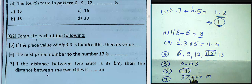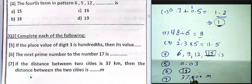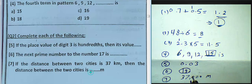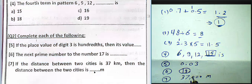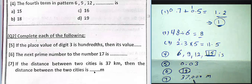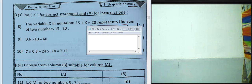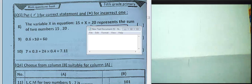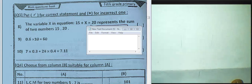Question 7: if the distance between two cities is 37 kilometers, what is the distance in meters? We must convert from kilometers to meters by multiplying by 1000. The result is 37,000 meters.